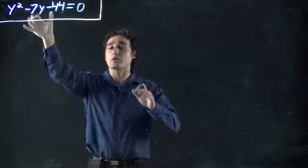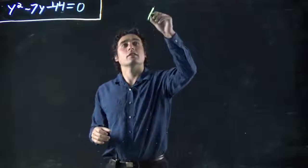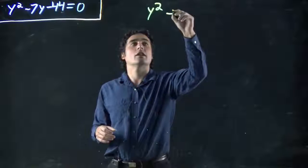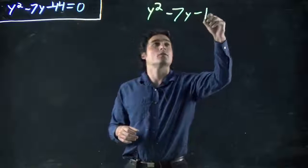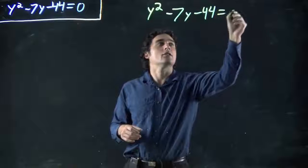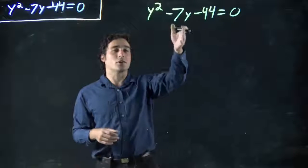But the main idea is we're going to try and solve these. We looked at a case like this already. We have y² - 7y - 44 = 0, and we're asked to solve for y.